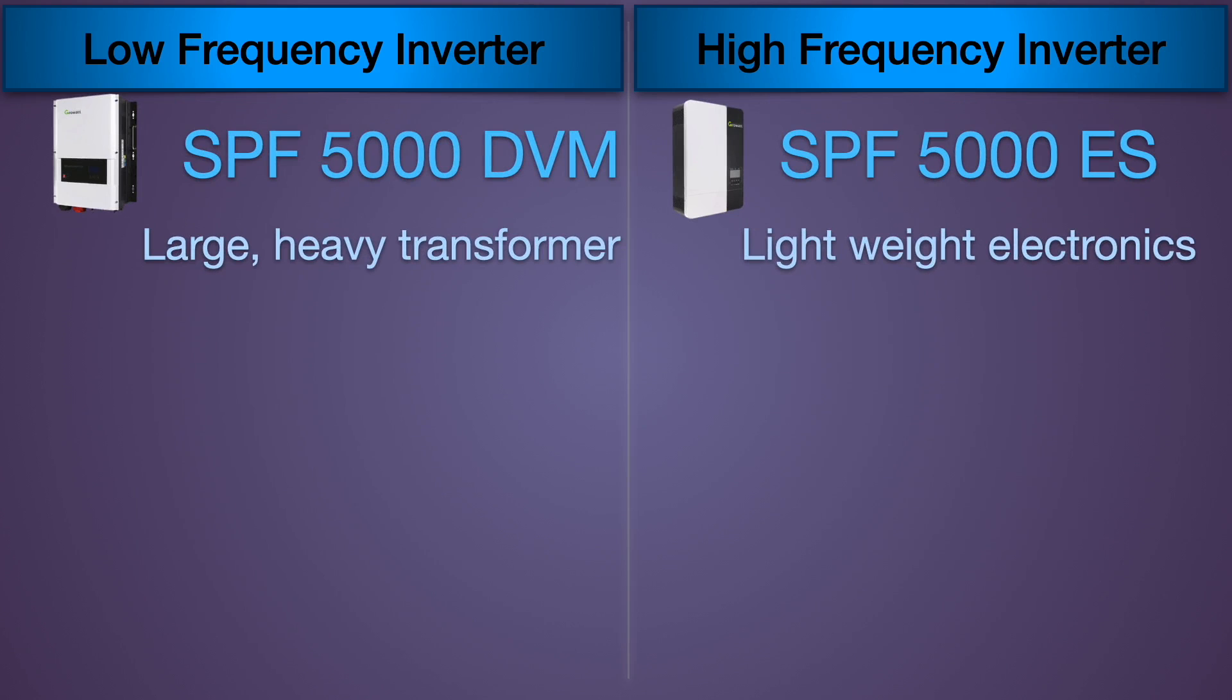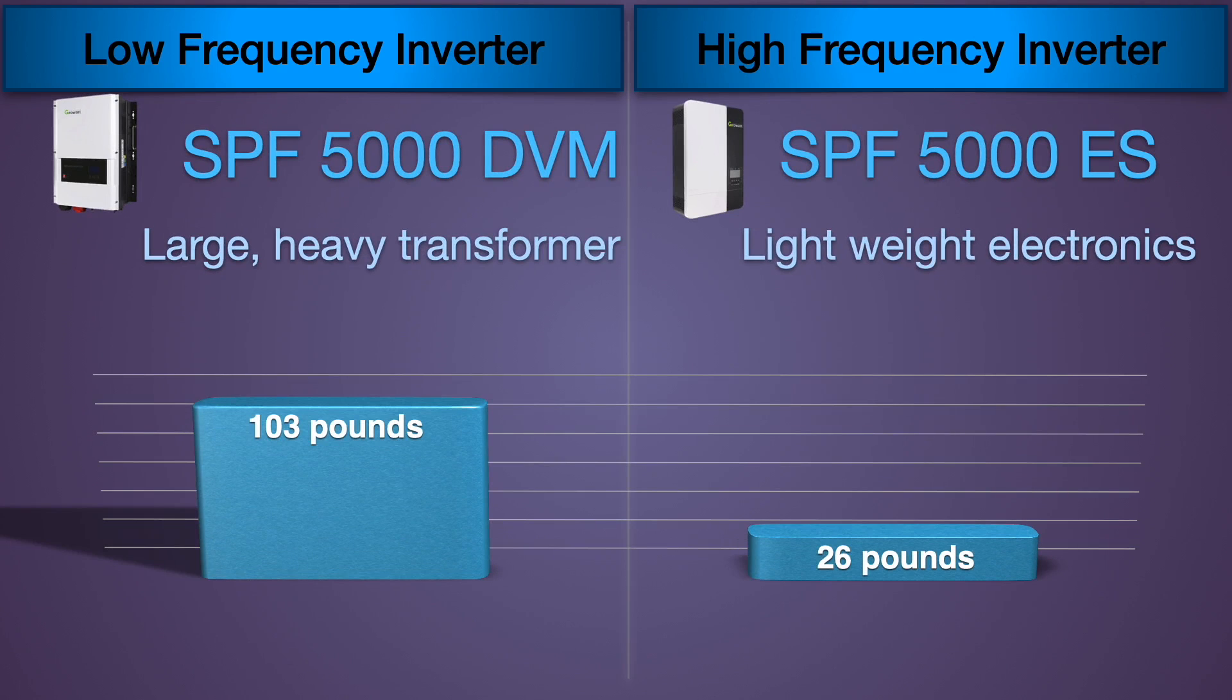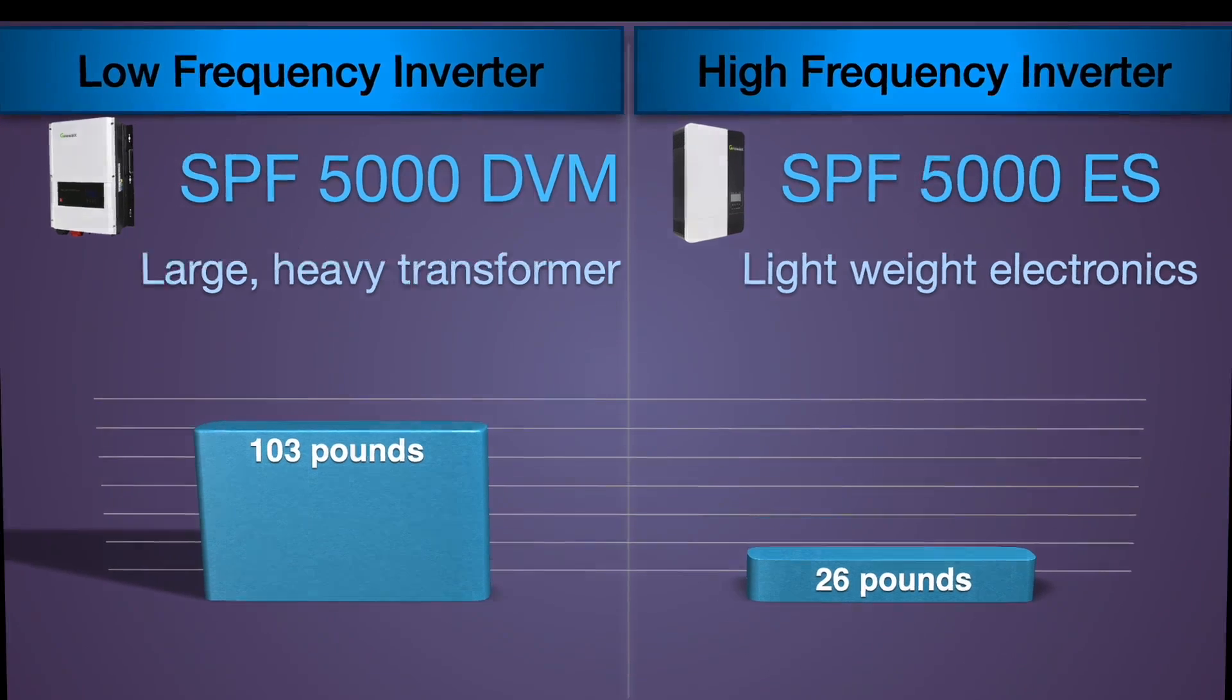It also weighs considerably more. It comes in at 103 pounds versus only 26 pounds for the ES, the high frequency. And you really appreciate this when you go to hang it on the wall, especially if you're trying to do that by yourself.